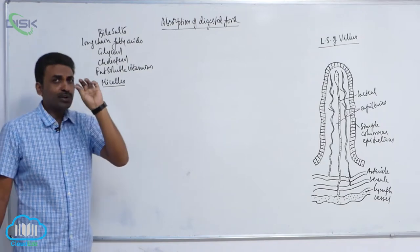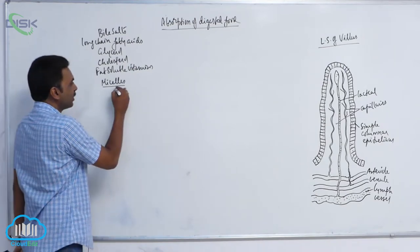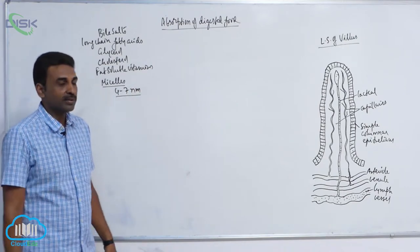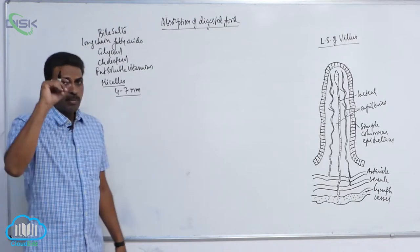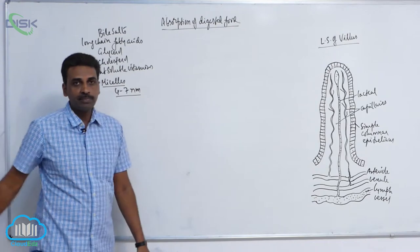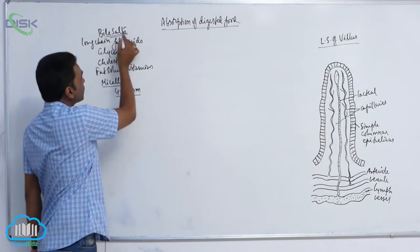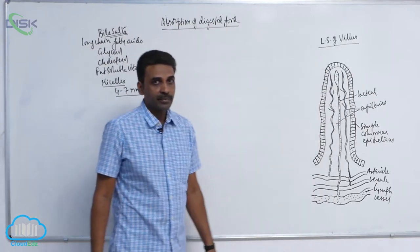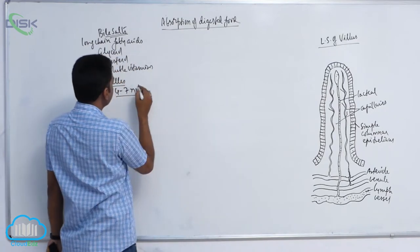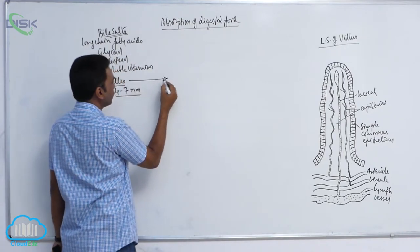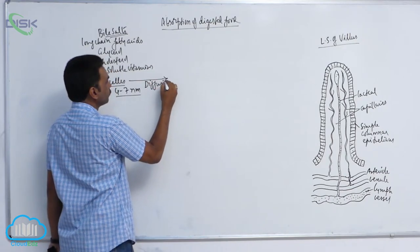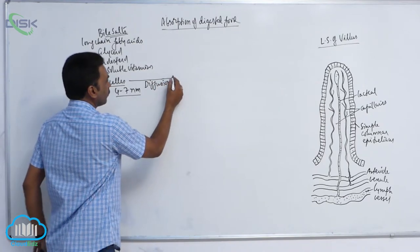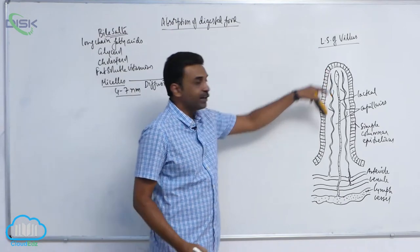They form minute droplets — the droplets are 4 to 7 nanometers, absolutely small. These minute droplets are called micelles. The micelles, in the presence of bile salts, undergo diffusion into the epithelial cells.